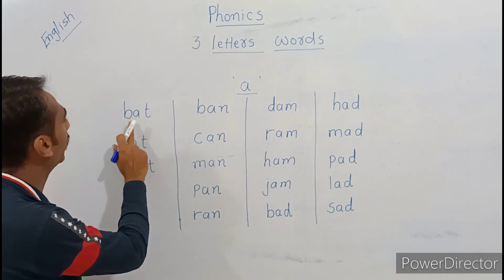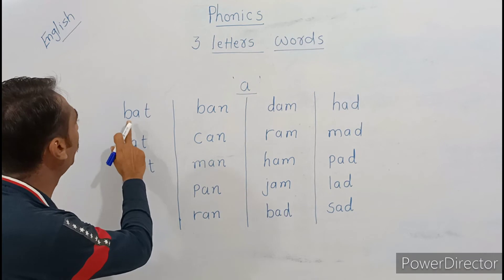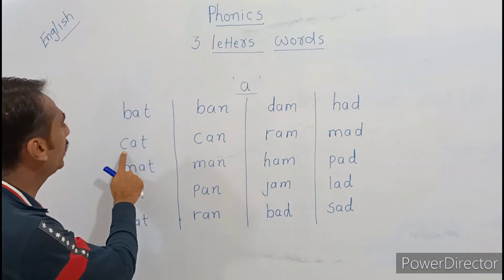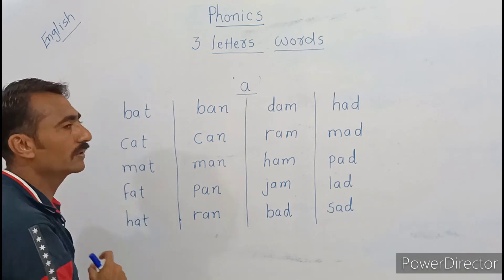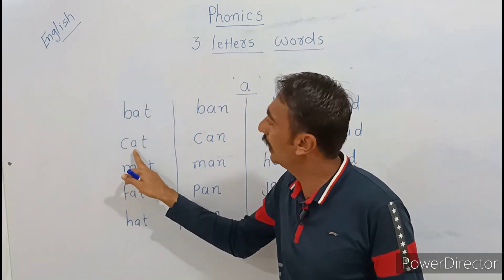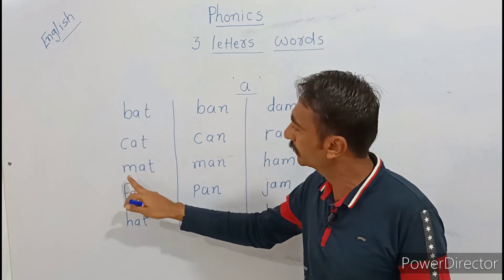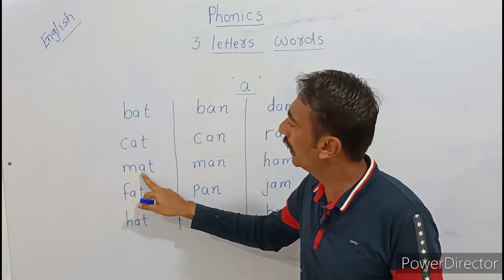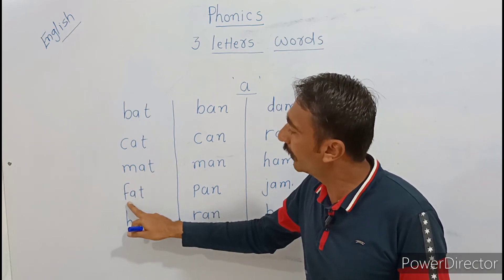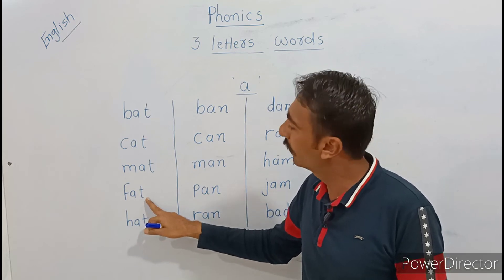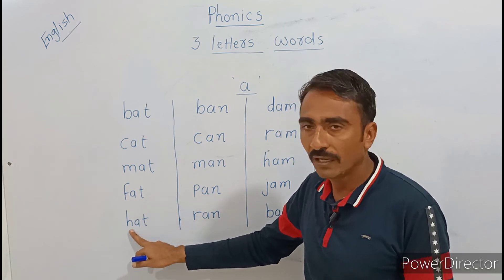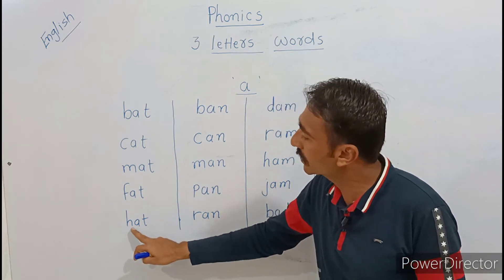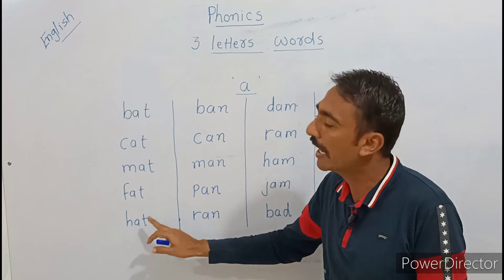B-A-T, B-A-T, B-A-T, bat. C-A-T, C-A-T, C-A-T, cat. M-A-T, mat. F-A-T, fat. H-A-T, hat. H, yarni ki H, to H-A-T, hat.